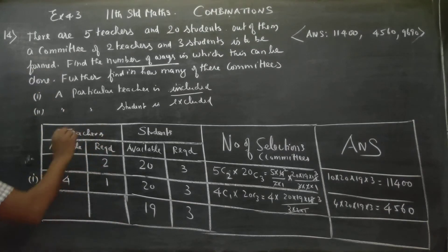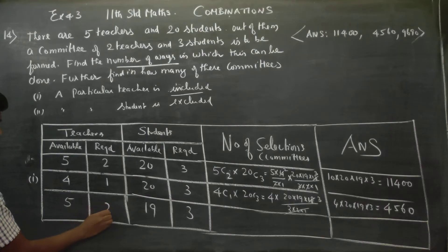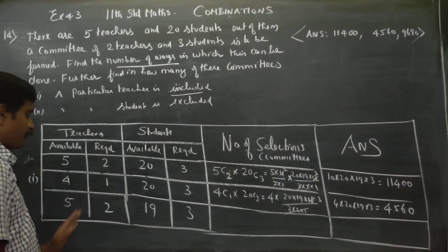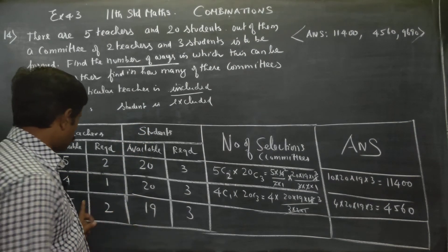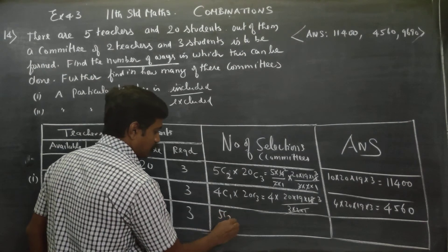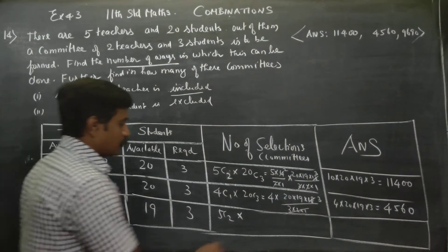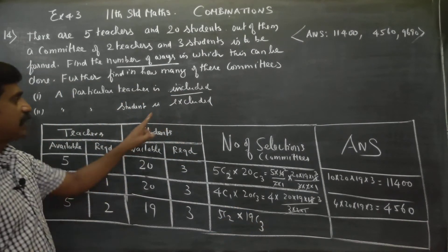For teachers, it is general — there are 5 teachers and you have to select 2. Since a student is excluded, out of 5 teachers you select 2, and out of the 19 remaining students you select 3.